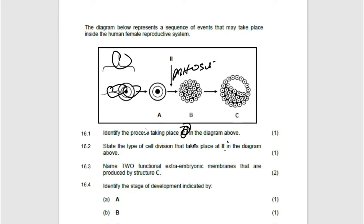State the type of cell division that takes place at two. Here, it is mitosis. And then they are saying name two functional extra embryonic membranes that are produced by structure C. Structure C. They are saying functional. It means something which is functioning. We have four extra embryonic membranes. We have the chorion, alantois, yolk sac, and then amnion.